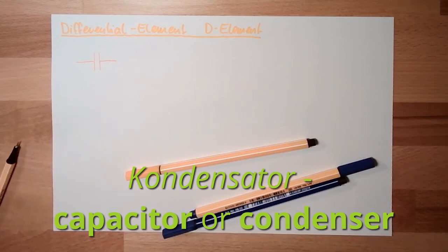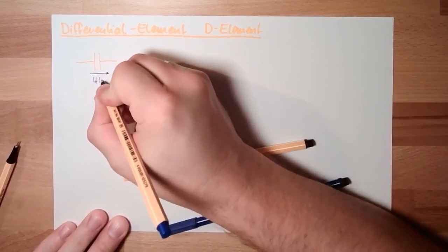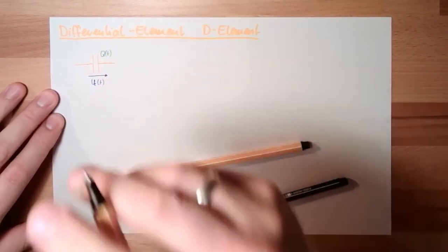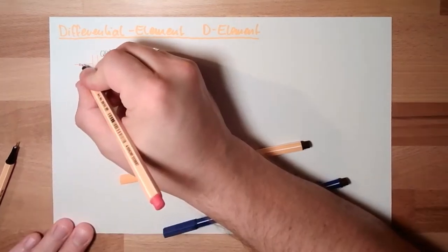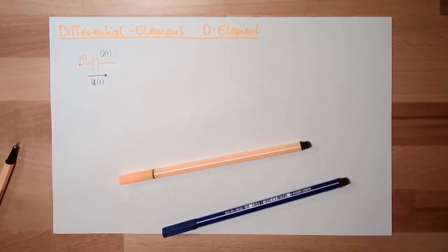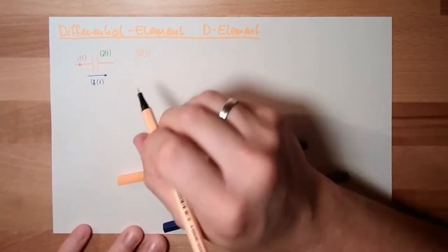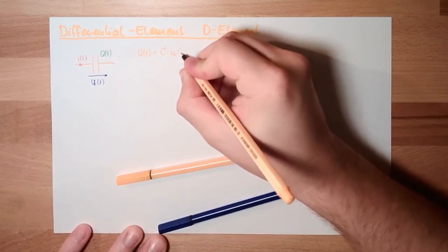At the capacitor we have a certain voltage, a certain charge, and of course we do have a certain current running through. And we know the formula for our charge. The charge inside the capacitor is the capacity of the capacitor multiplied by the voltage of the capacitor.